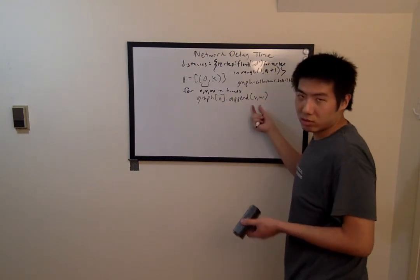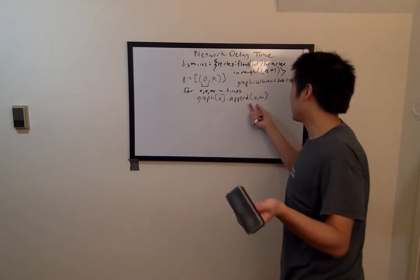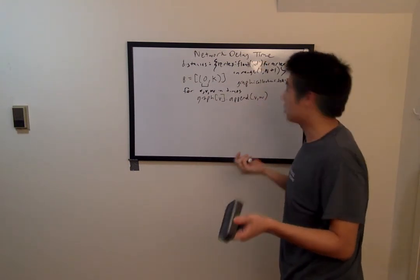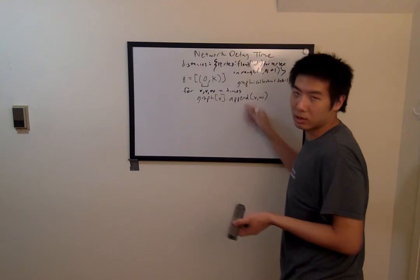And the tuples are ordered such that the zeroth index houses the neighbor itself, which is labeled by an integer. And the second index is the edge weight.